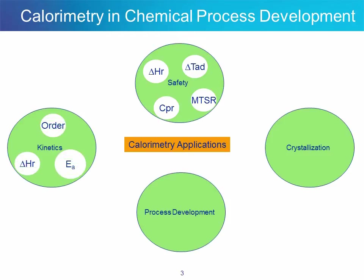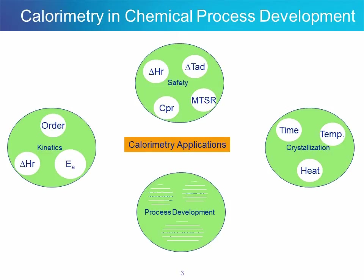The second area is kinetics. Combination of calorimetry with other techniques like React-IR is very common to obtain reaction information like heat of reaction, but also activation energy and reaction order. A further area is crystallization. Crystallization studies can greatly benefit from the use of calorimetry, for instance to determine time and temperature when crystallization occurs, as well as heat of reaction and heat of dissolution.